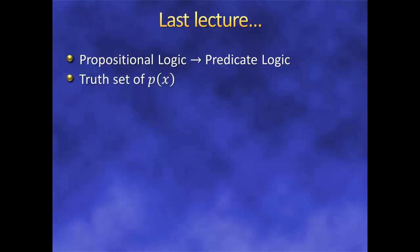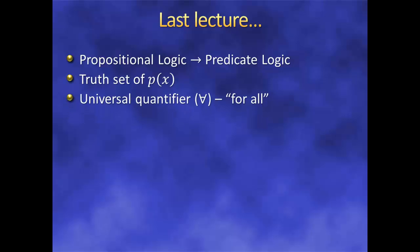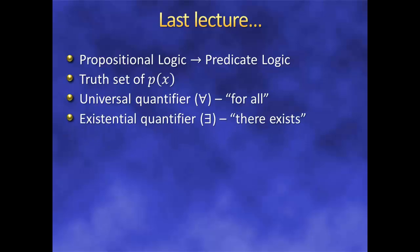We talked about the truth set of a predicate — all the values that will make the predicate true. We introduced two quantifiers: the universal quantifier, which has a basic meaning of 'for all,' and the existential quantifier, which has a basic meaning of 'there exists.'